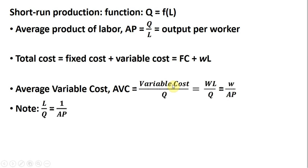Substituting in for variable cost is W times L, then dividing that W times L by Q, we get this expression which will simplify down to the wage divided by the average product of labor. How do we go from this part to this part?